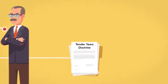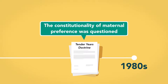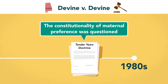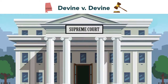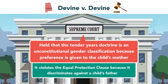This maternal preference for custody persisted until the 1980s when the constitutionality of maternal preference was questioned in the Alabama case, Divine v. Divine. The Alabama Supreme Court held that the tender years doctrine is an unconstitutional gender classification because preference is given to the child's mother. It violates the Equal Protection Clause because it discriminates against the child's father.